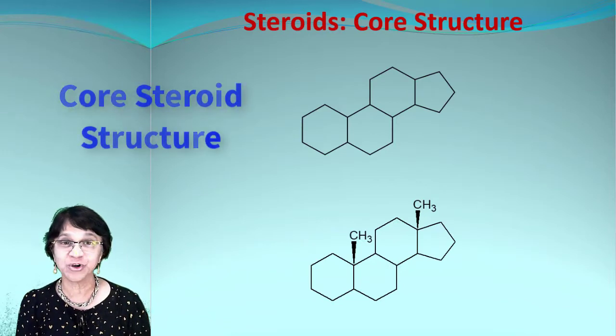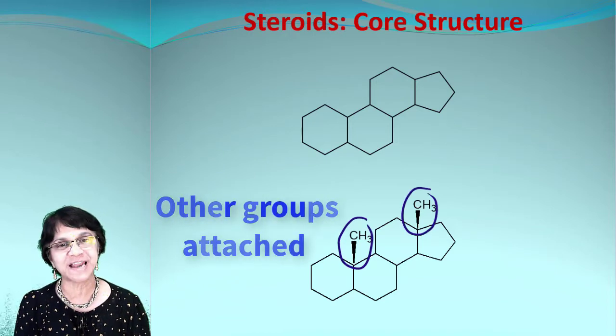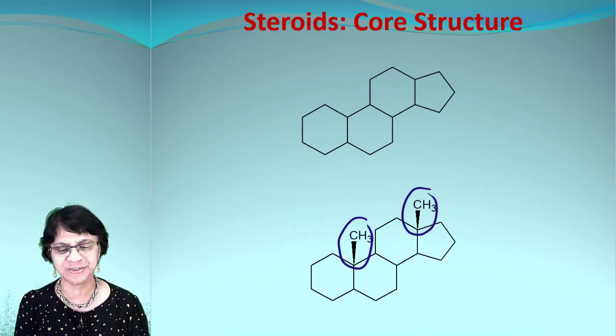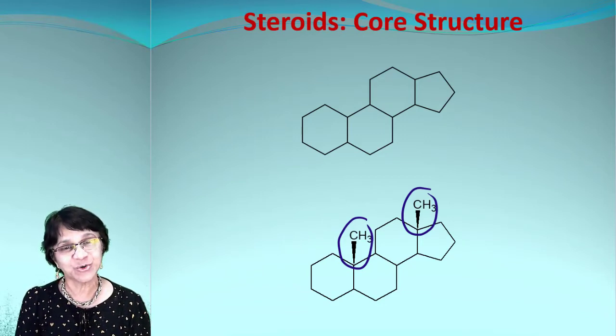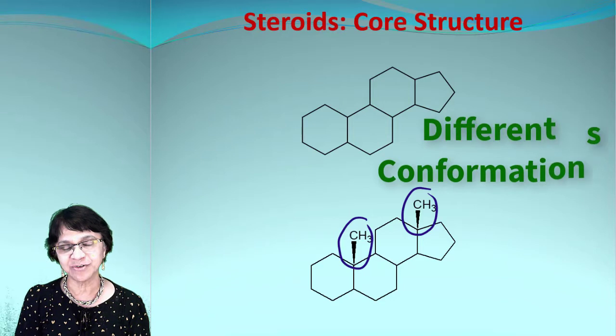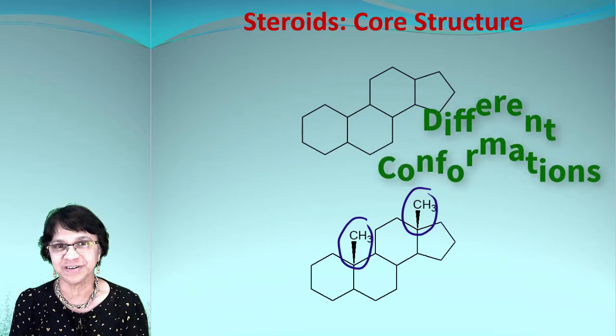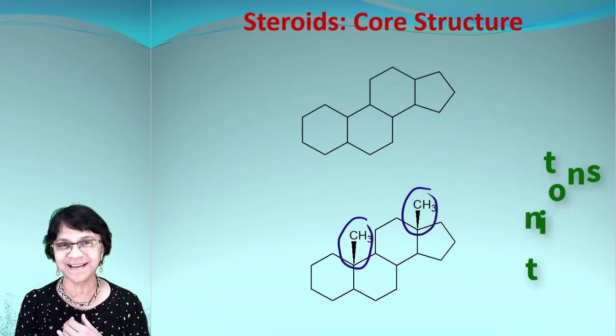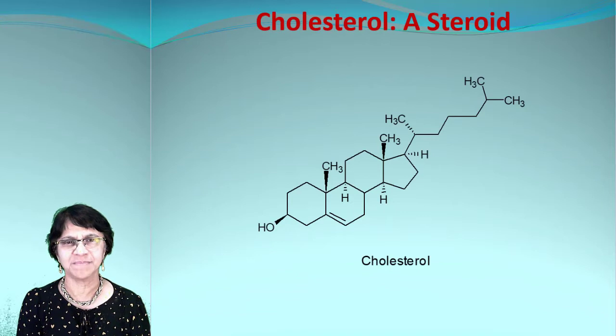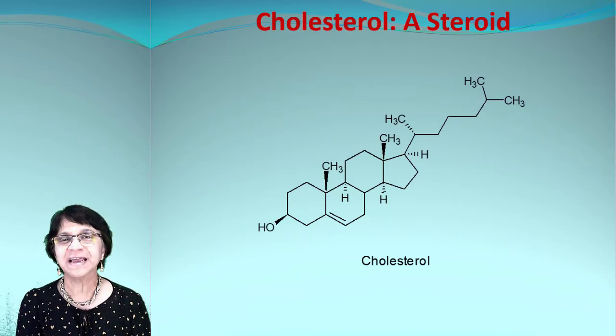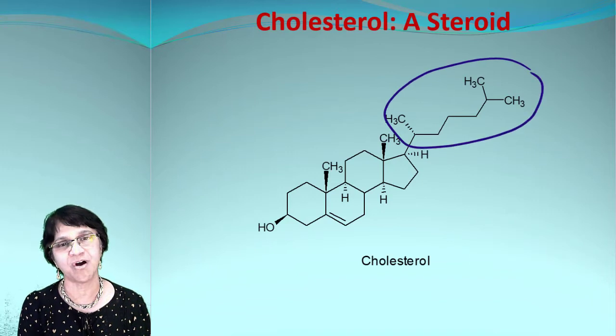When I said there could be other groups attached, look at that—we have normally some groups like methyl groups or OH or some other groups attached. It is still a steroid. Also, we will talk in a minute about these groups shown in different conformation, and they are called as alpha and beta. Look at this, this is cholesterol. You all must have heard about cholesterol. The main thing with cholesterol is it has got this long branch, and we will talk about numbering for the branch also.